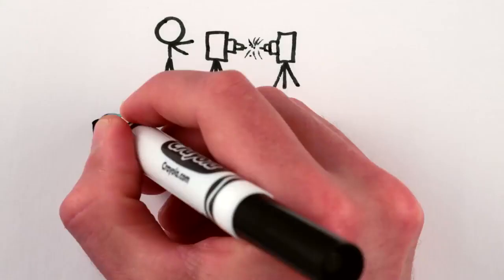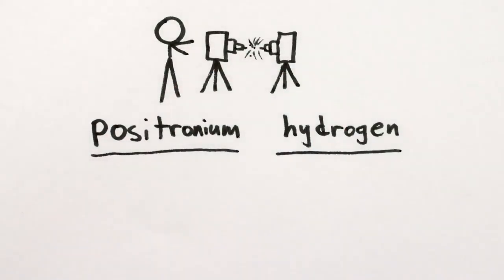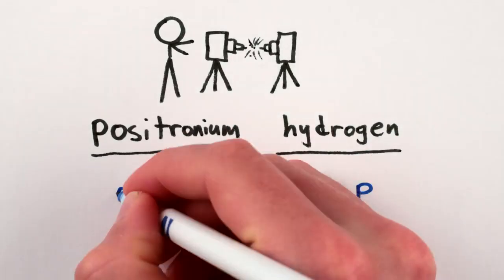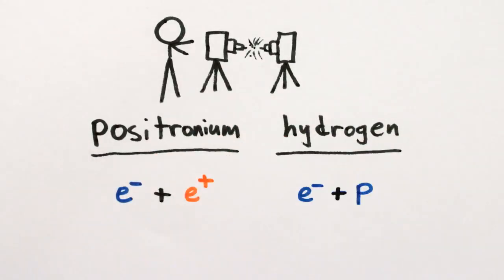We can also make the really cool positronium atom. It's like hydrogen, except instead of an electron orbiting a proton, it's an electron orbiting a positron, until they annihilate each other in under a nanosecond.